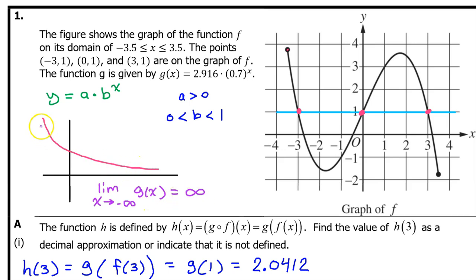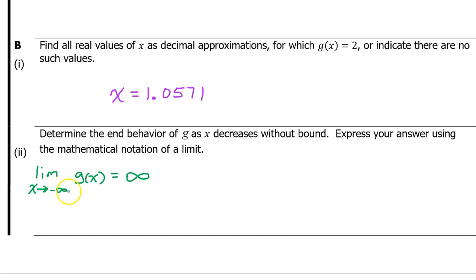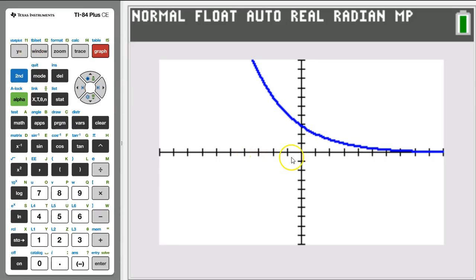However, as we go to the left, or as x decreases without bound, the value of g of x rises infinitely. So, the limit as x approaches negative infinity of g of x equals infinity. This is the answer to B part 2. Notice that you should not need the graphing calculator to answer this question. However, a glance at the graphing calculator does confirm what we already knew. As x decreases without bound, g of x increases without bound. In other words, the limit as x approaches negative infinity is positive infinity.